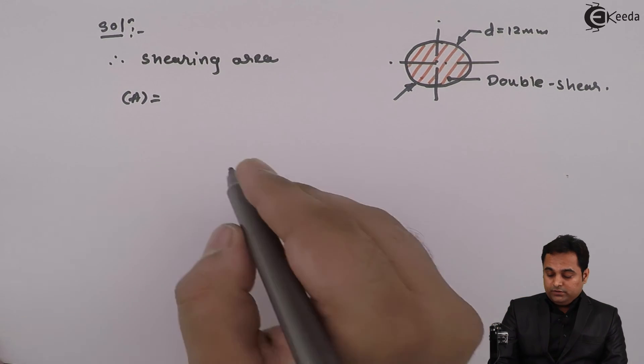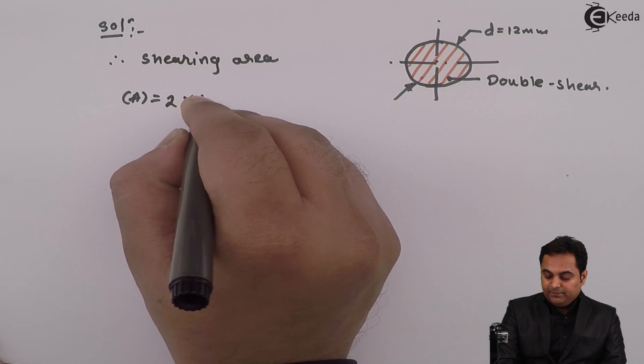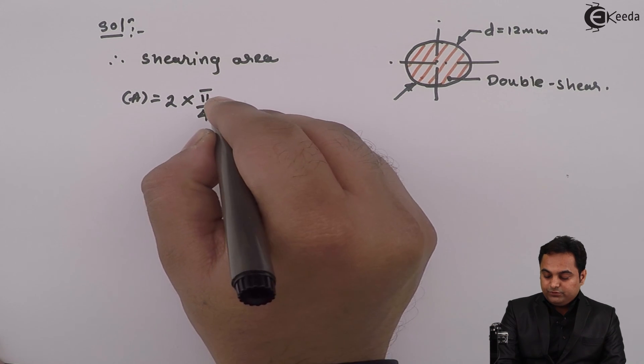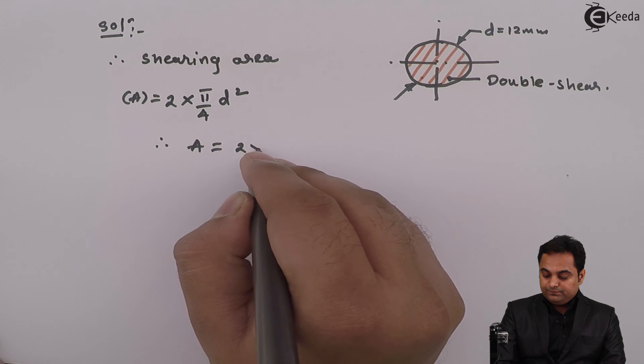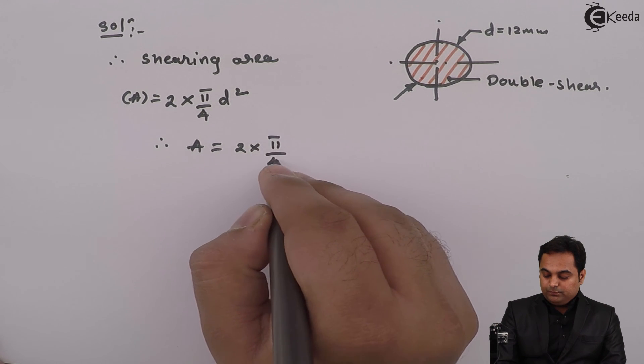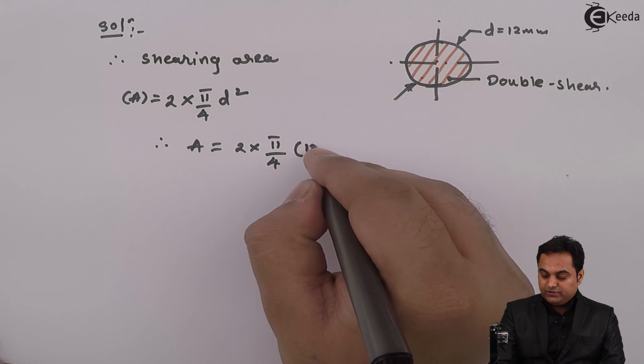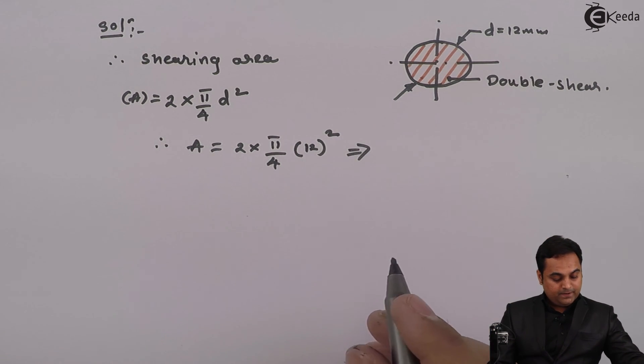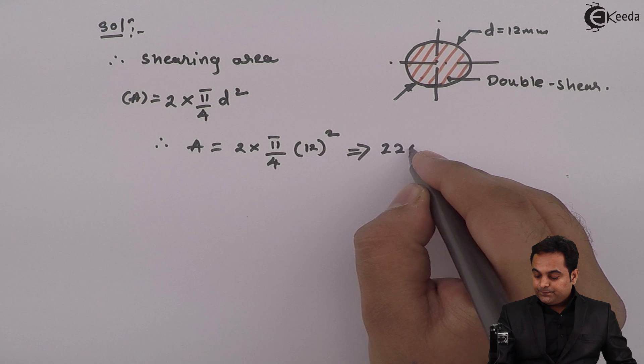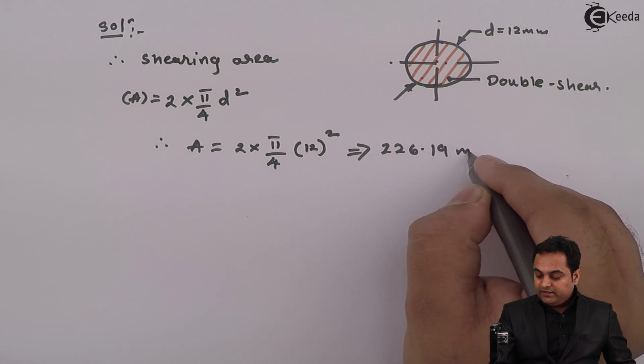Therefore, shearing area is equal to, for double shear we have to multiply by 2, so capital A equals 2 times pi by 4 times D squared, which is 2 times pi by 4 times 12 squared. This value comes out to be 226.19 mm squared.